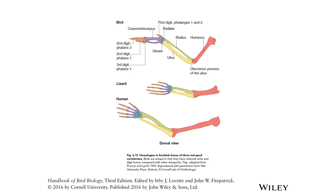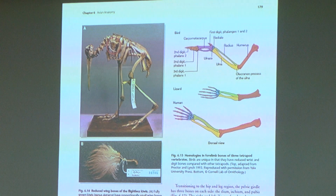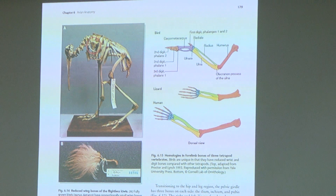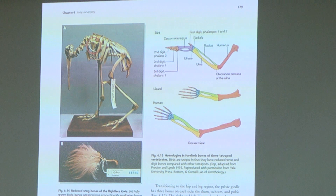You've got phalanges that stick out, and all of these have feathers and muscles attached that make the wing more aerodynamic, enable flapping, and resist the stresses associated with flapping. You actually go through a lot of wear and tear as you keep flapping your wings.